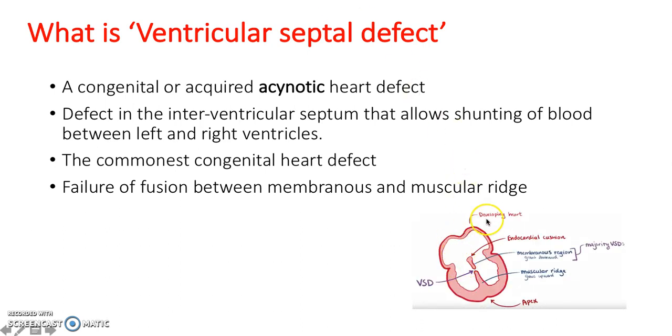As we can see here in the developing heart, here's the endocardial cushion, here is the apex of the heart, and here's the muscular ridge. This is a VSD — where this should have joined but didn't.